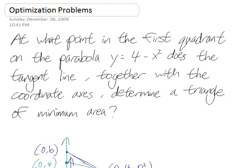So let's take a look at this problem. At what point in the first quadrant on the parabola y equals 4 minus x squared does the tangent line, together with the coordinate axes, determine a triangle of minimum area?